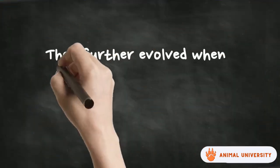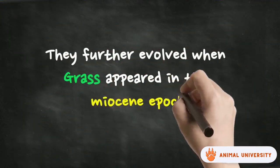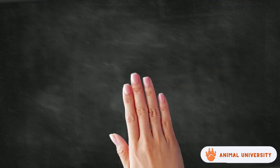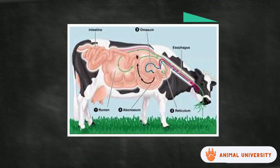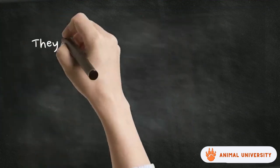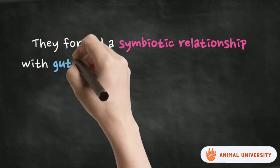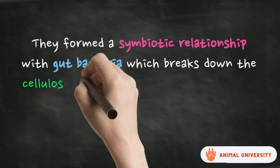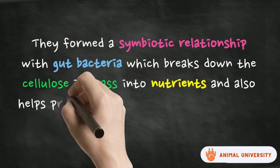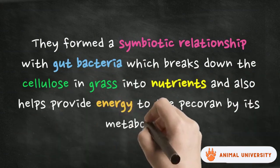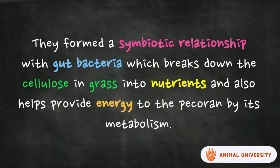They evolved in the early Eocene epoch around 54 million years ago in Eurasia. They used to be small herbivorous mammals that usually eat leaves. However, they further evolved when grass appeared in the Miocene epoch, which resulted in pecorans developing very complex stomachs with many chambers. They formed a symbiotic relationship with gut bacteria.